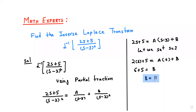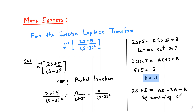Now the next target is to solve for A. We expand: 2s + 5 = As minus 3A + B. By comparing coefficients of s on both sides, this side we have 2 and on the other side we have A. So the value of A is 2.